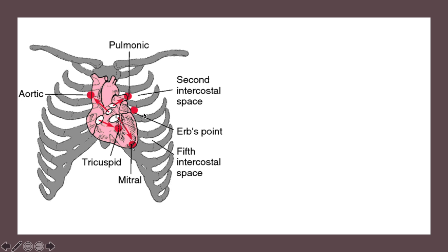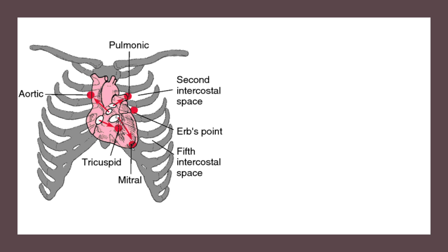At Erb's point you end up hearing the usual lub-dub, i.e., S1 and S2, which we'll go into in detail later. At the fourth point, what you hear most is the tricuspid valve, found between the right atrium and right ventricle — the closure of the tricuspid valve is projected in that direction. So the fourth point is mainly used for the tricuspid valve. The fifth point is the apex, where the mitral valve is best heard. This diagram is important to pause and study to understand which vector plane each valve's sound travels in.